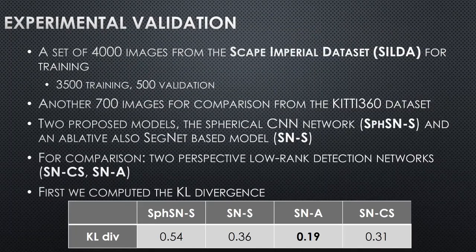For the experimental validation, we used a 4000-image set from the Scape Imperial dataset for training, and another 700 images for comparison from the KITTI 360 dataset. We trained two models: the spherical CNN network and an ablative segment-based model. The difference is that the ablative model did not use the spherical operations and pivot image. We also used two perspective low-rankness detection networks for comparison.